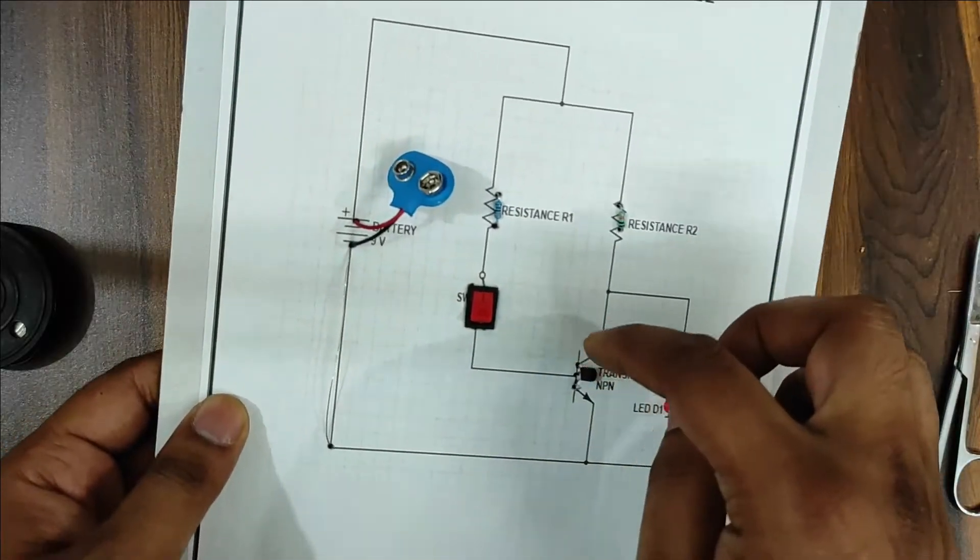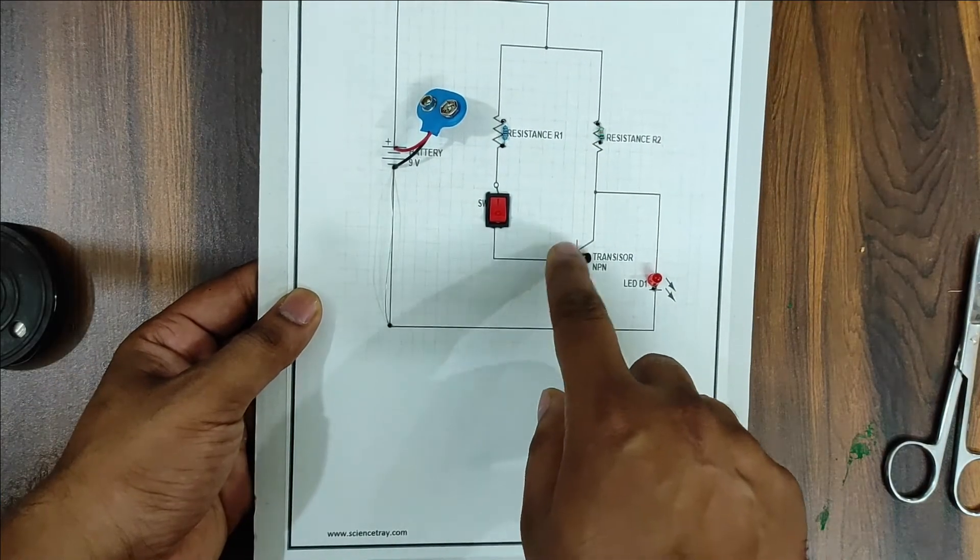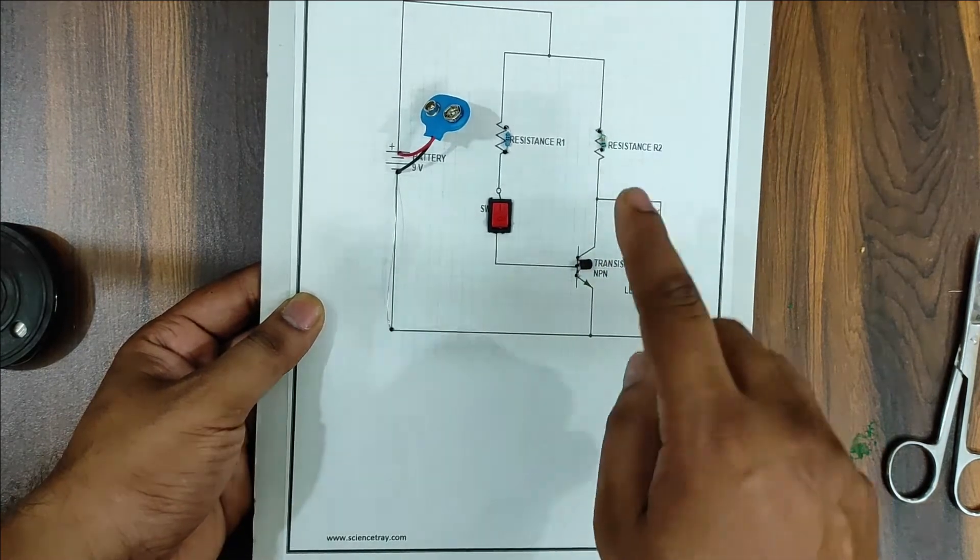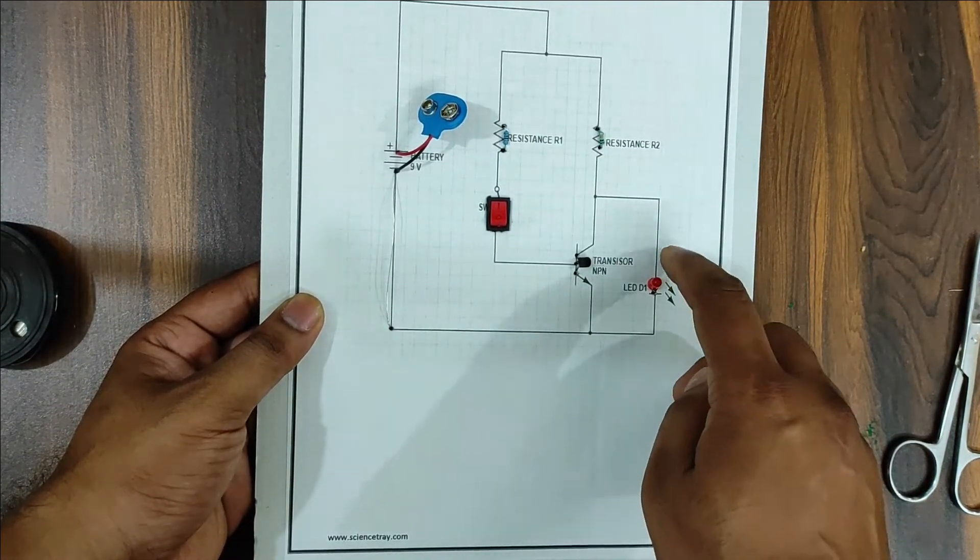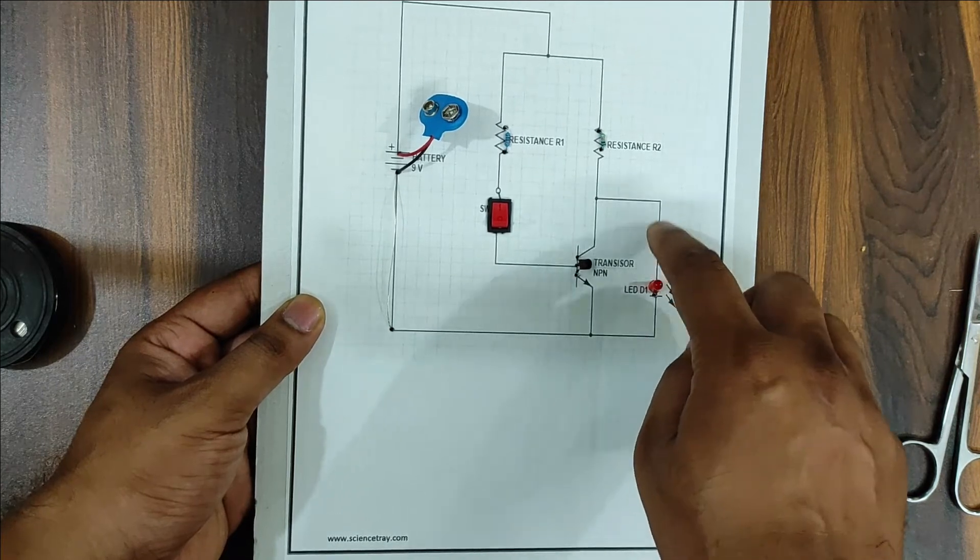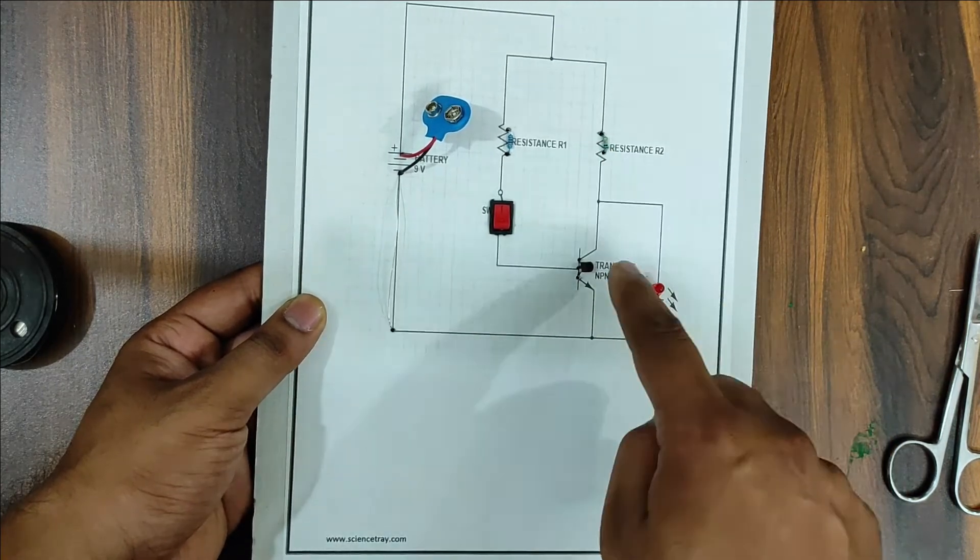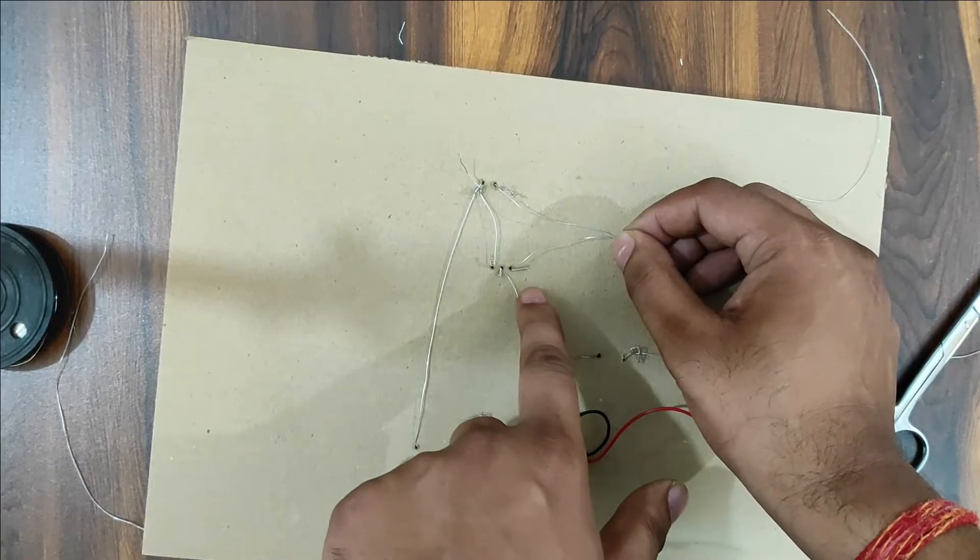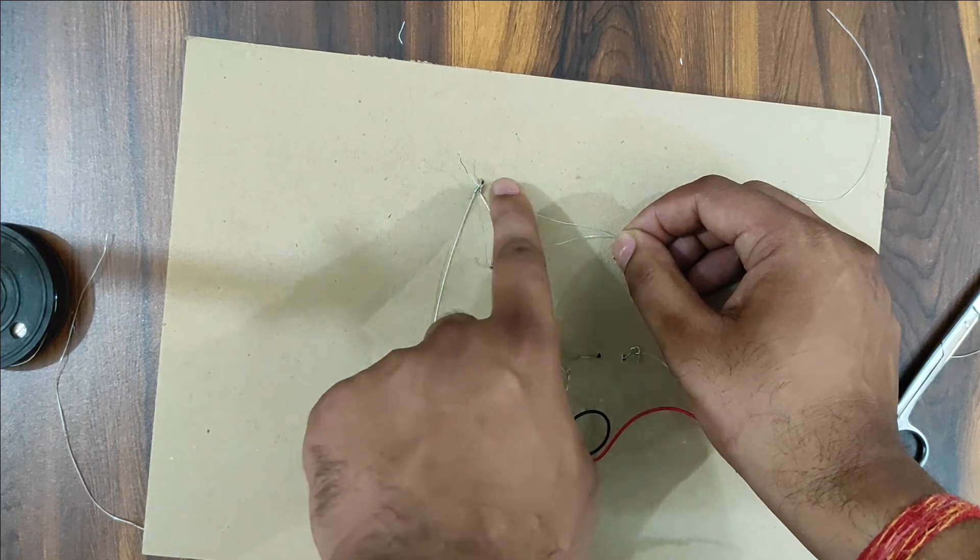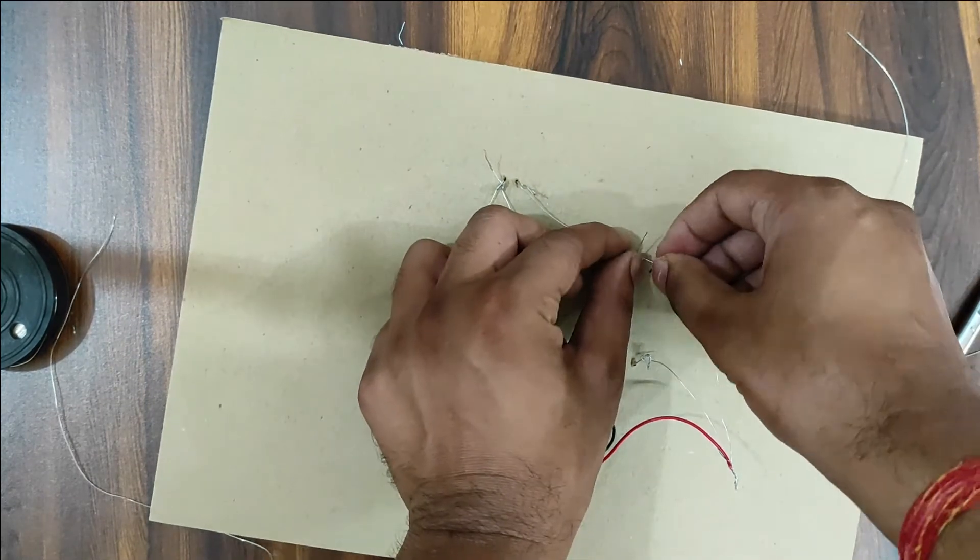This battery connects to the base collector. The R2 is connected with the battery. There are two connections here. This is a collector and is connected to negative through the resistance.